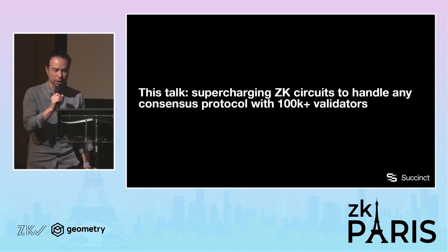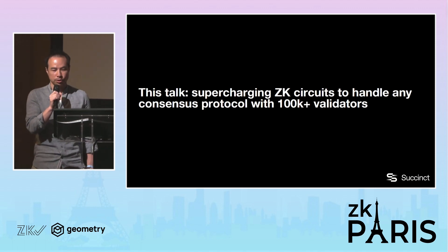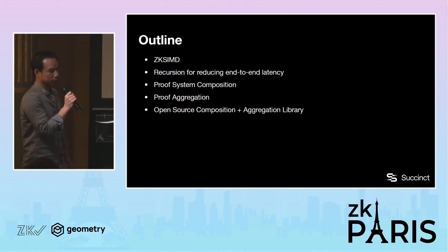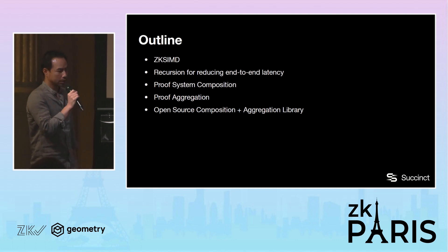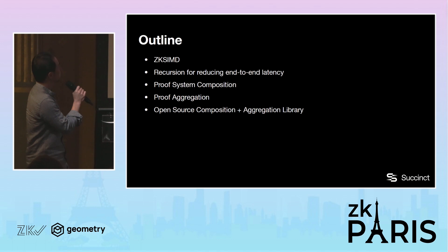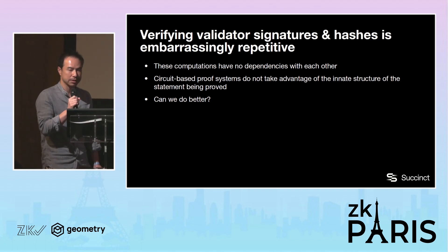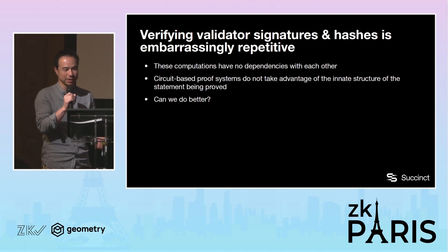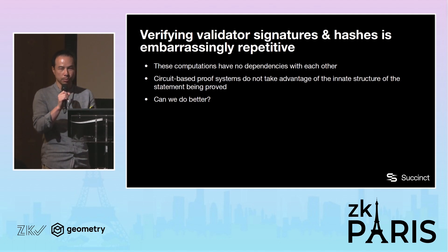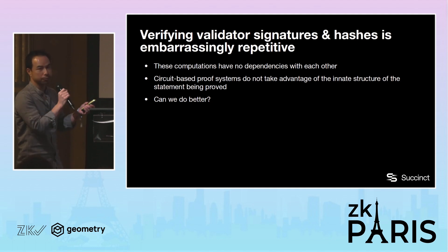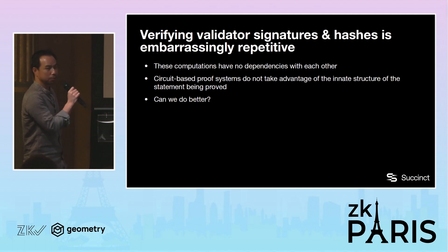In this talk, I'm going to talk about how we're supercharging ZK circuits to handle consensus protocols with over 100,000 validators. Verifying validator signatures of hashes is embarrassingly repetitive and parallelizable. When we're verifying a number of signatures, there are really no dependencies among this set of computation. The thing is, circuit-based proof systems don't really take advantage of this innate structure of this workload. So we asked if we can do this any better.